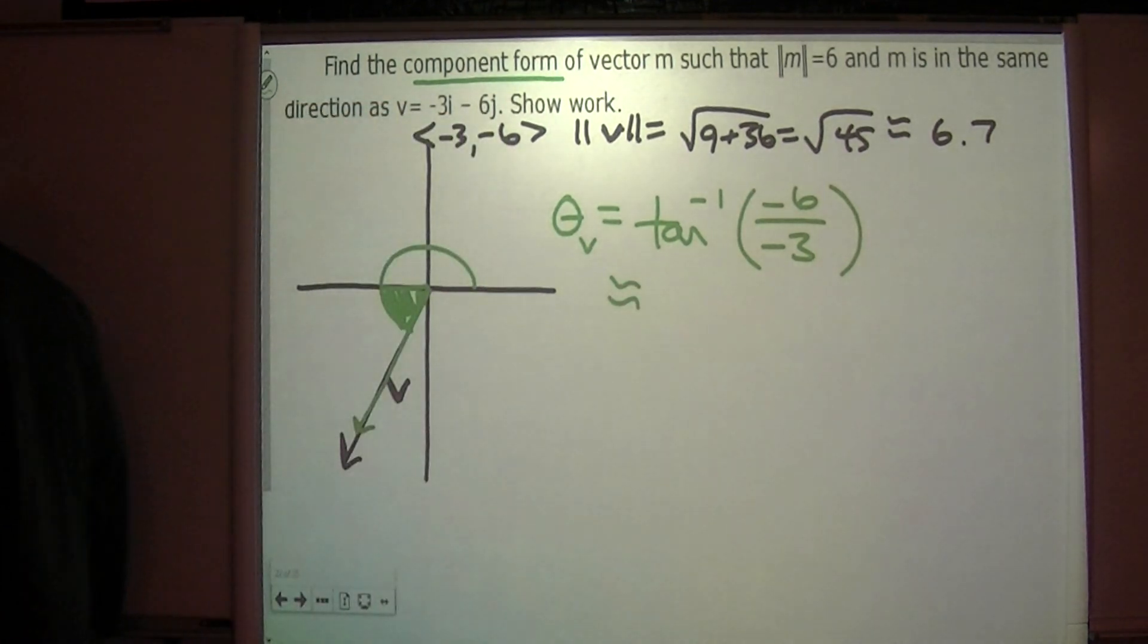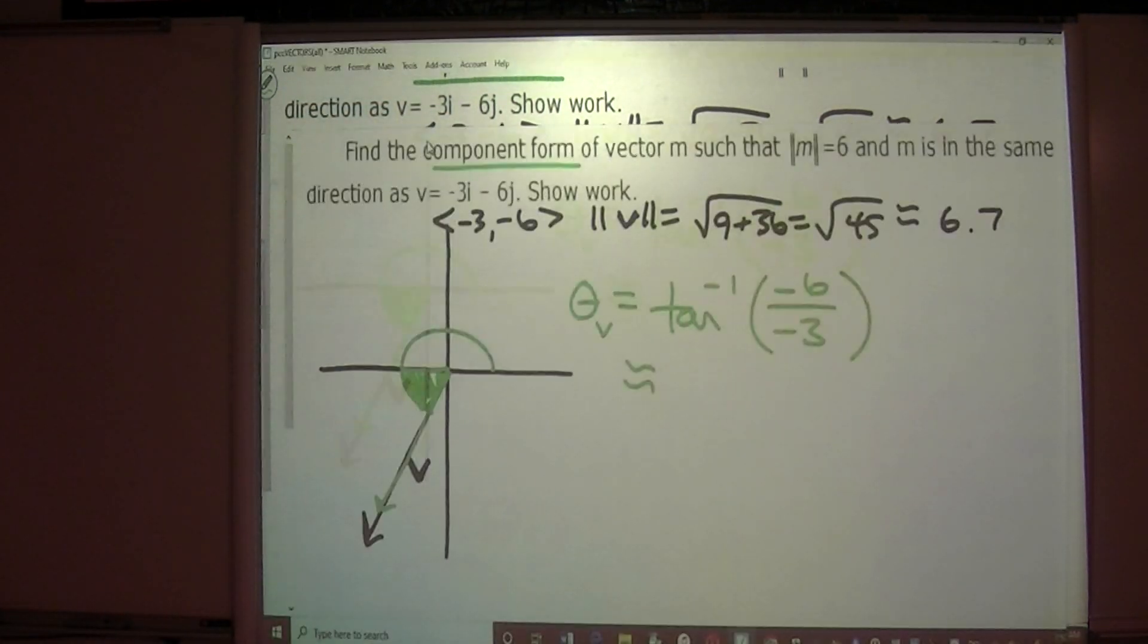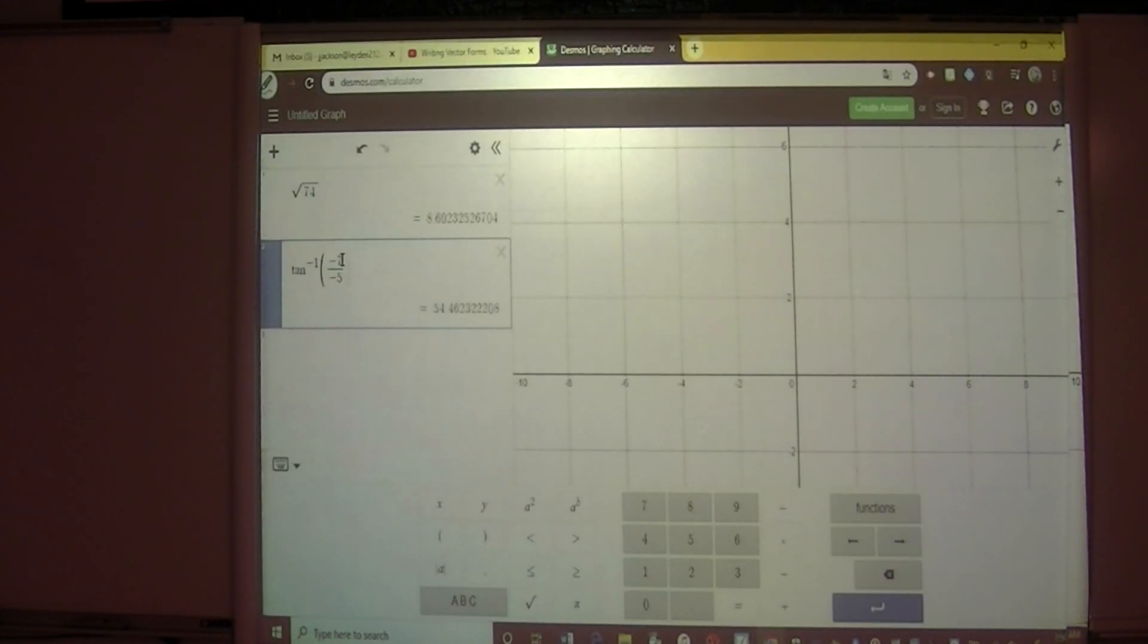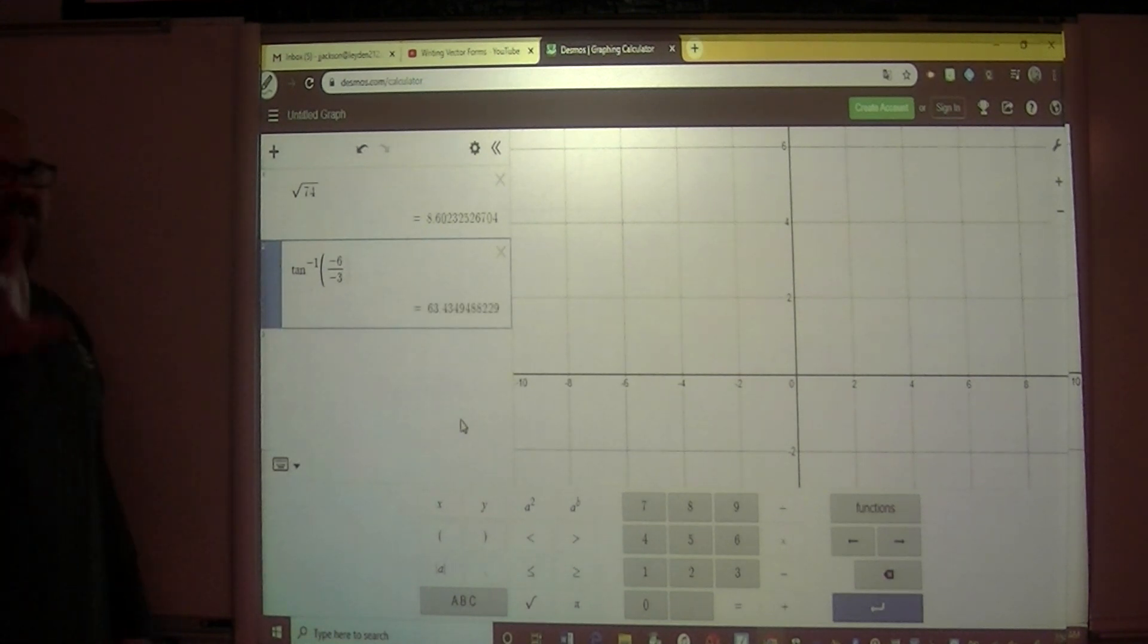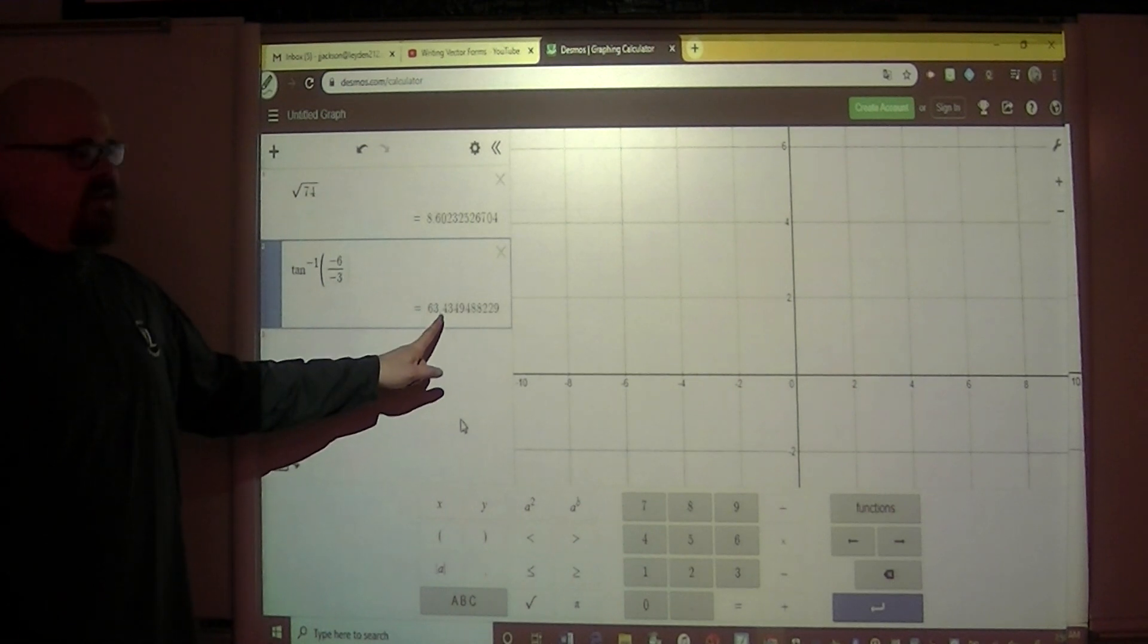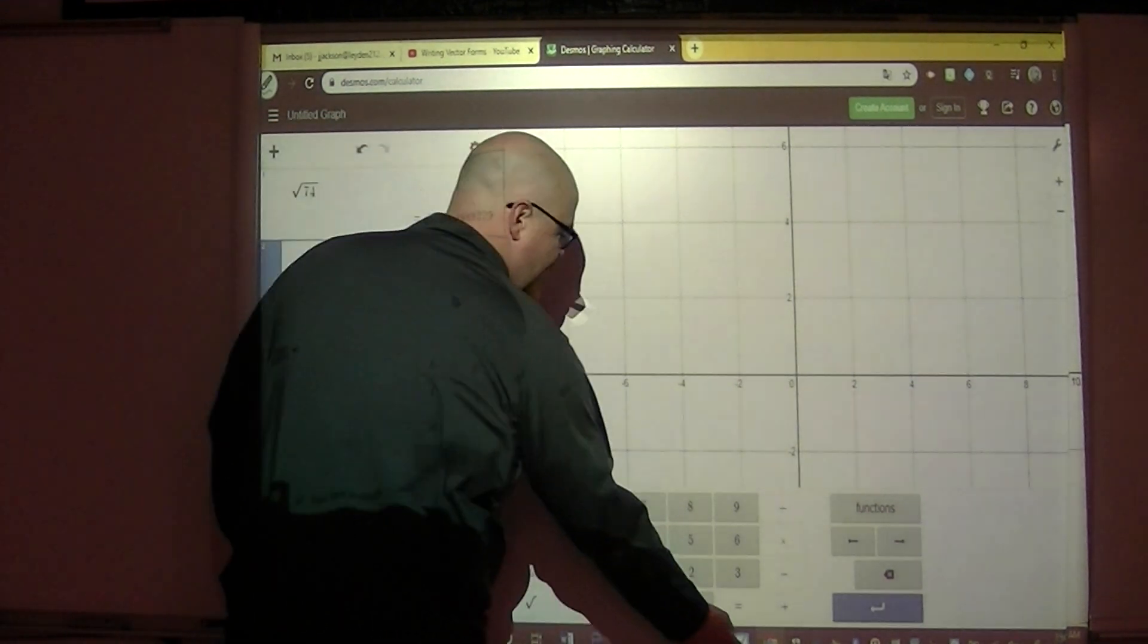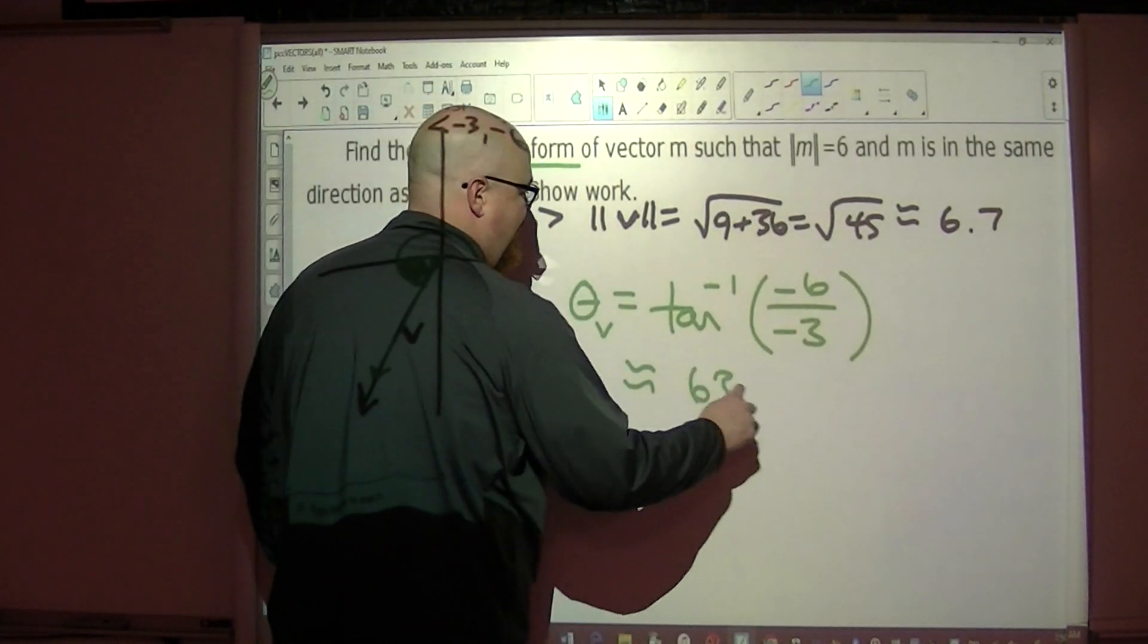Right, that's our formula for finding the direction angle. I think I've still got Desmos open over here. So the inverse tangent, I'm just going to change these, inverse tangent of negative six over negative three is sixty three point four. I know it's hard for you guys to see this but this is 63.4 degrees. So since the formula tells me 63.4 degrees.